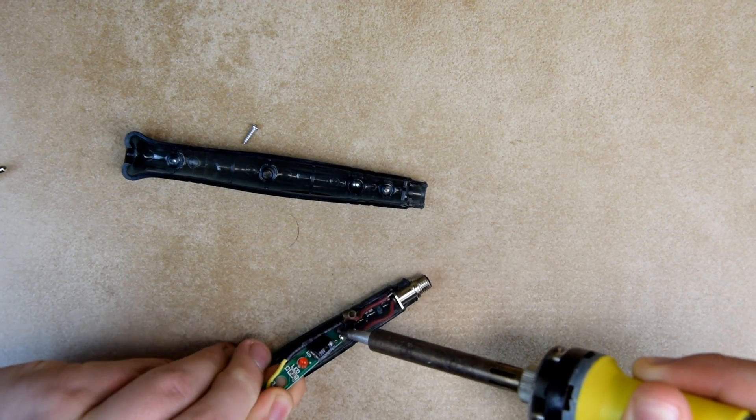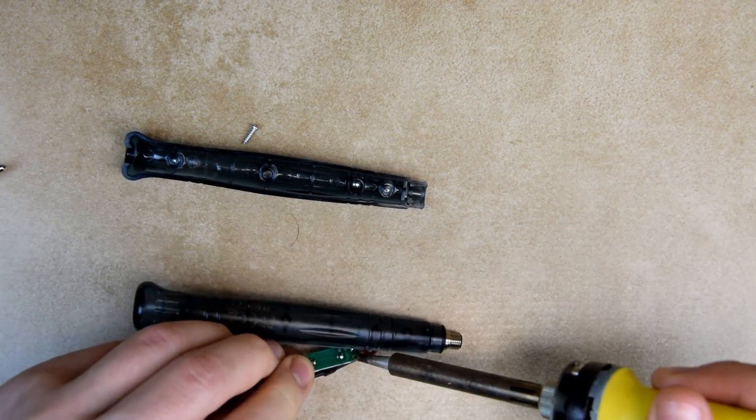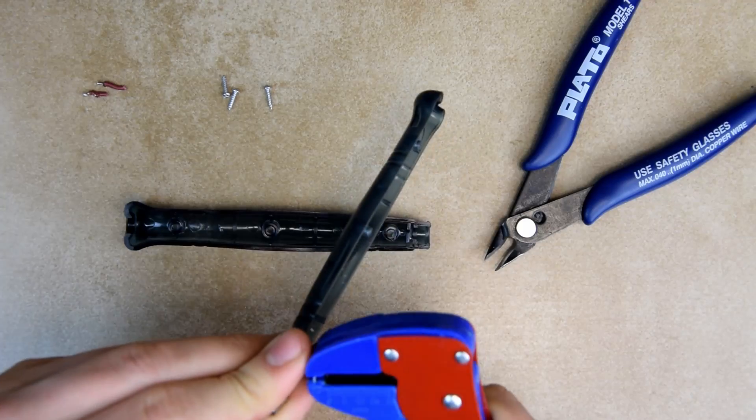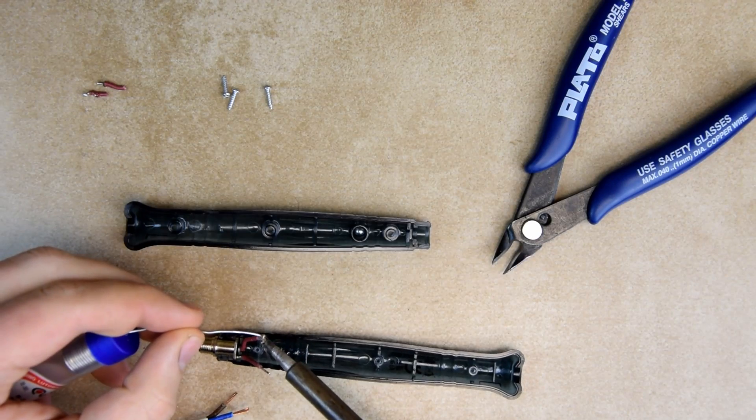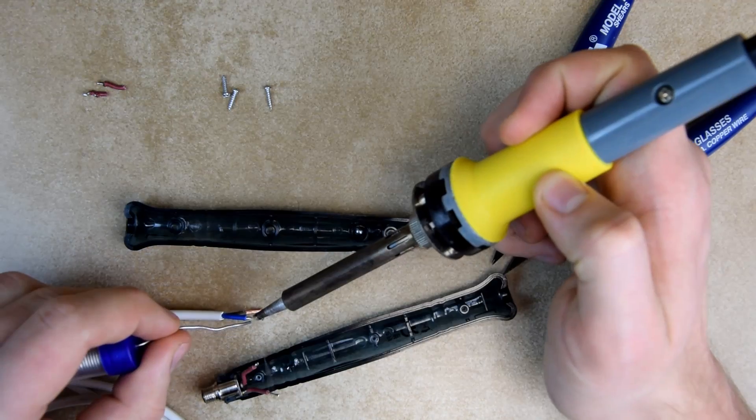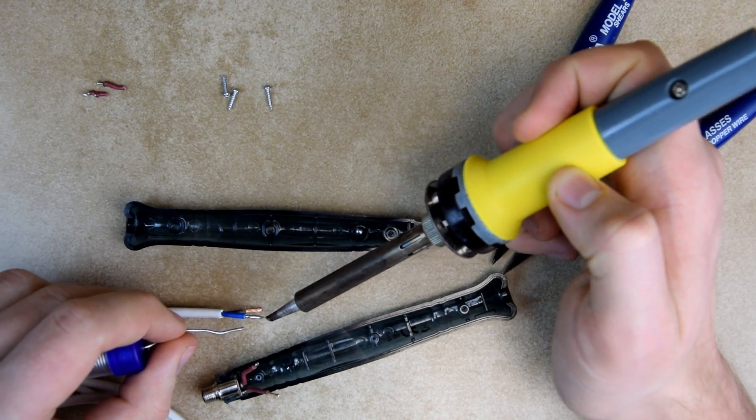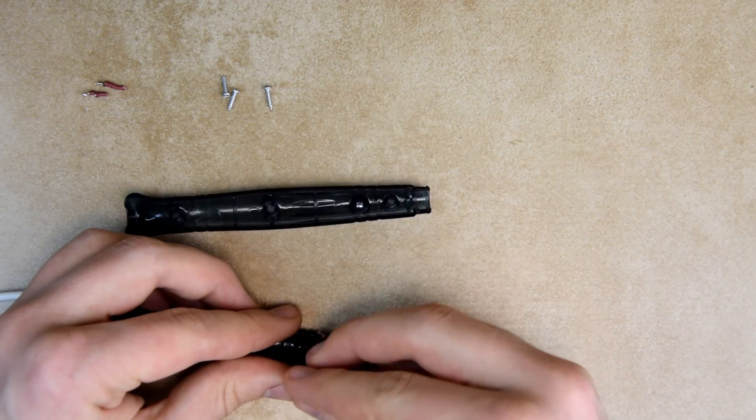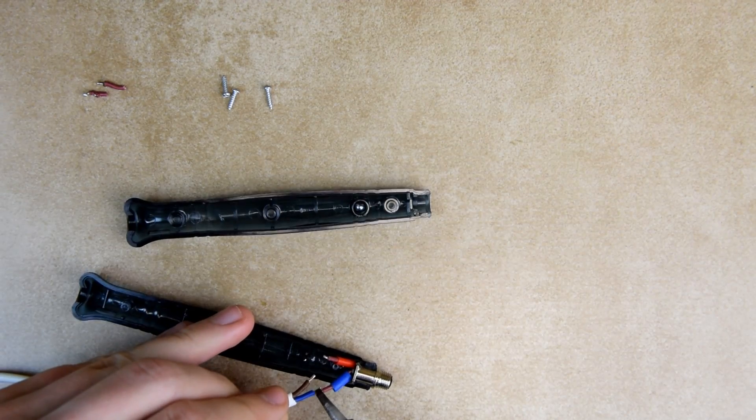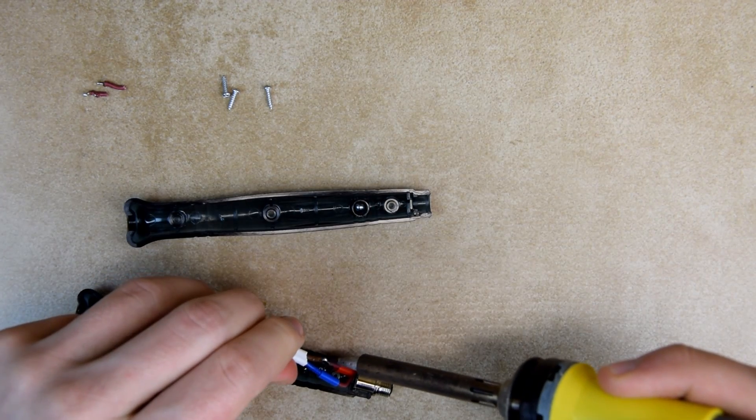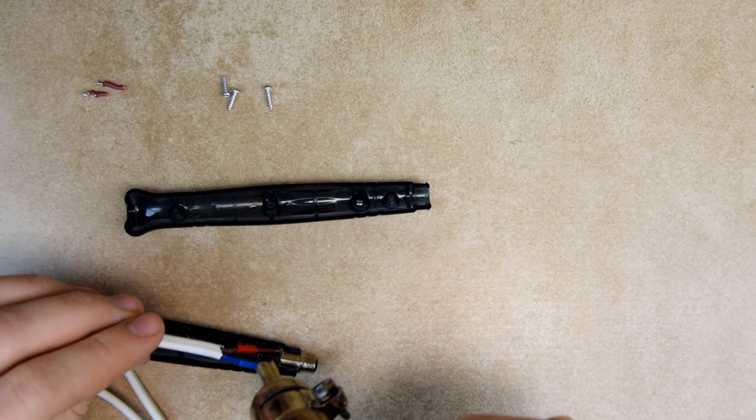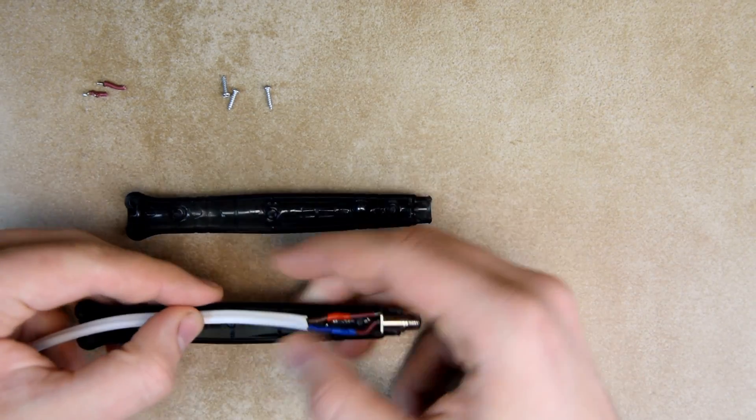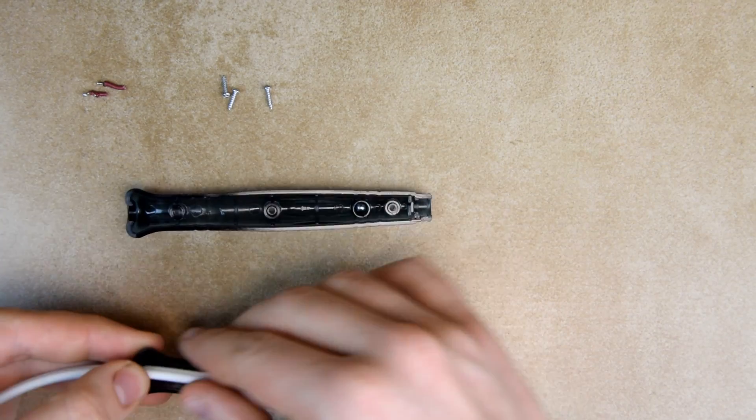Now we desolder the old PCB and connect our cables to the remaining wires, insulating them with shrink tubing. We route the cable out of the back of the case and put it back together.